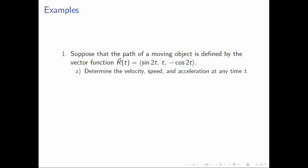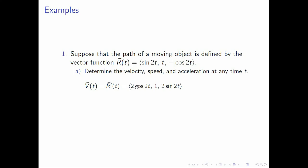Let us start with letter a. We are given r of t, and we want to find the velocity function. Recall that v of t equals r prime of t, so to obtain v of t we just differentiate r of t component-wise. The first component of our velocity function is the derivative of sine 2t, which is 2 cosine 2t. The second component is the derivative of t, which is 1. And the third component is the derivative of negative cosine 2t, which is 2 sine 2t. And this is our velocity function.